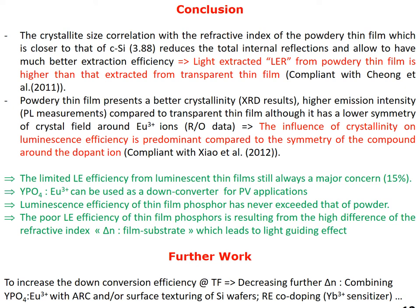We can draw the conclusion that limited light extraction efficiency from luminescent thin films is still a major concern. Also, yttrium orthophosphate doped with europium can be used as a down-converter for photovoltaic applications, and the luminescence efficiency of thin film phosphors has never exceeded that of powder. The poor light extraction efficiency of thin film phosphors results from the high difference of the refractive index between the film and the substrate, which leads to a light guiding effect.